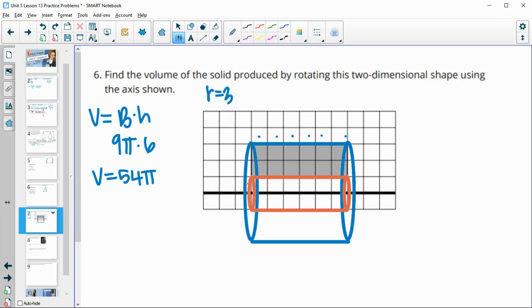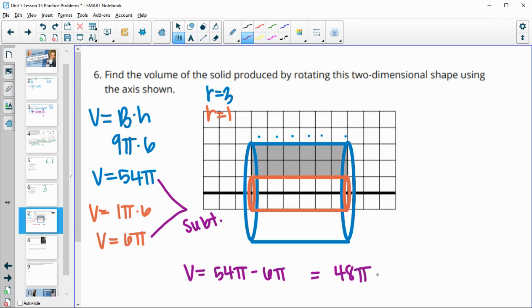Then we'll go to find the volume of this inner cylinder. That cylinder has a radius of one. So the volume here, one squared is one. So we have 1π times, and this is the same height of six. So this volume is 6π. So then when we go to find the volume of just the solid, we'll subtract these. So then our volume is going to be 54π minus 6π, which is 48π units cubed.